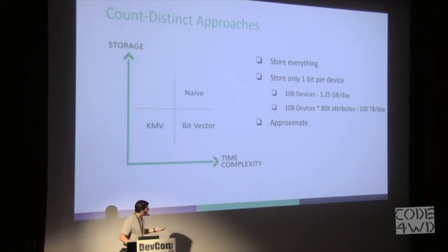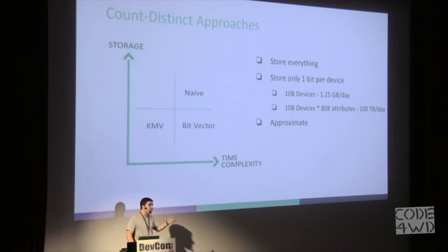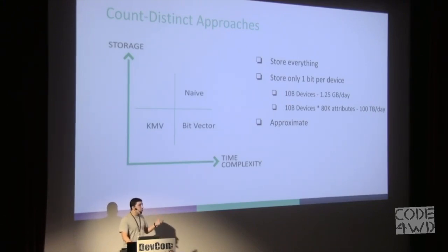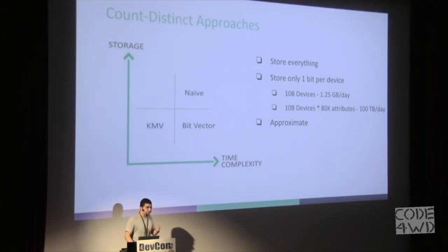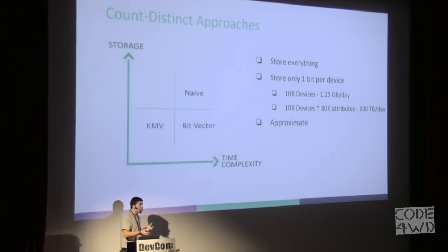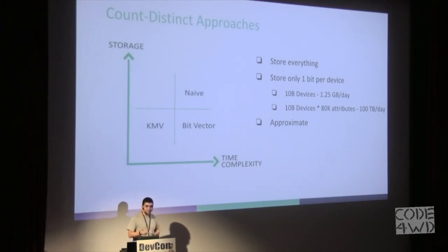There is a better approach, which is to use a bit vector — an array of bits. In this approach we store only one bit per device, because we are only interested in knowing whether we have seen this device today or not. Using this approach we can also use bitwise computation to make things even faster.